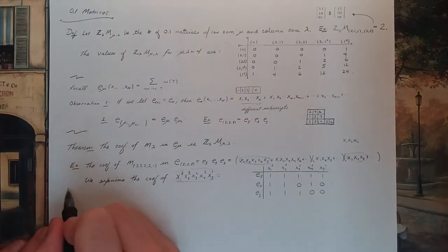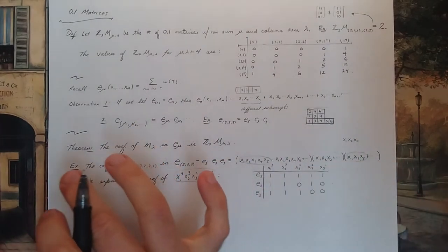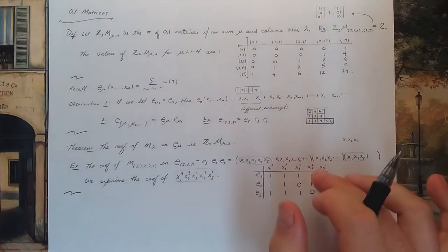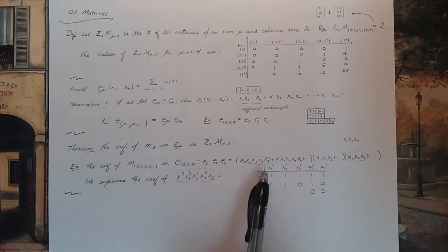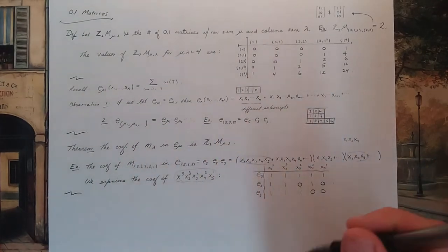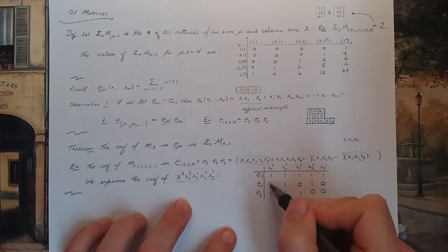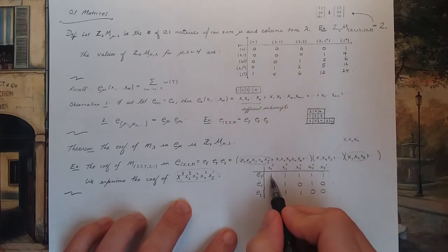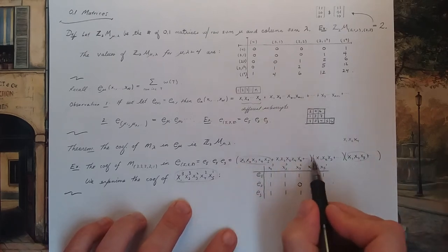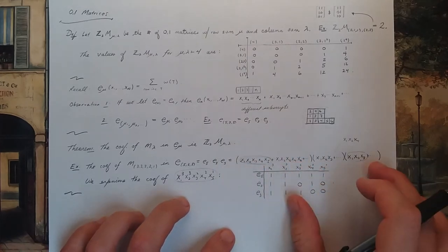This works in general: the coefficient of m_λ in E_μ corresponds to filling out a 0,1 matrix with row sums given by μ and column sums given by λ, where a 1 means you take that subscript from that parenthesis and a 0 means you don't.